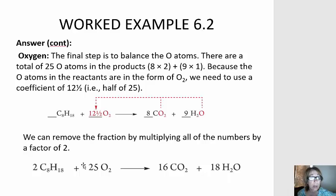Now let's look at oxygen. 25 times 2 is 50 on my reactant side. So 16 times 2 is 32, plus 18 is 50. So my oxygen atoms are balanced as well.